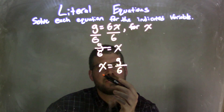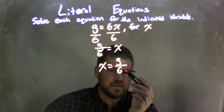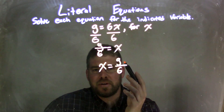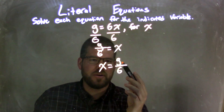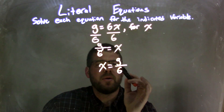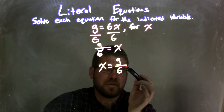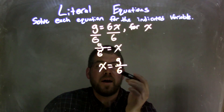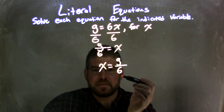So x is by itself, and g is on the right over 6. Since we don't know what number g is — it can be any real number — we don't divide further, so we just leave it as g over 6. Our final answer is x equals g over 6.